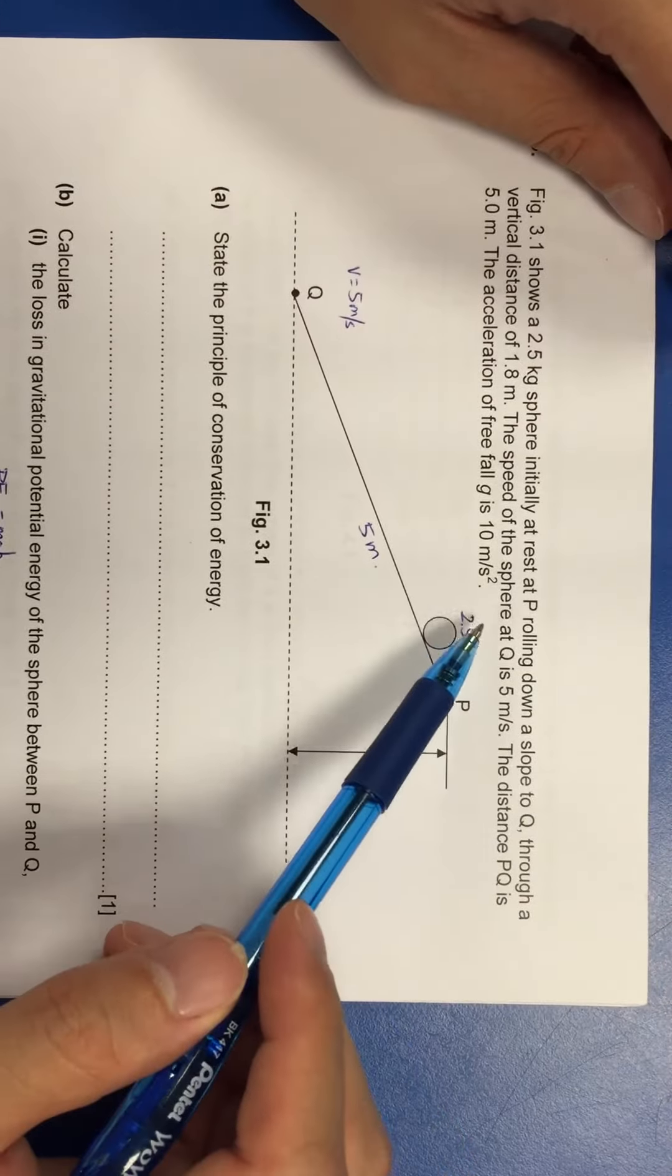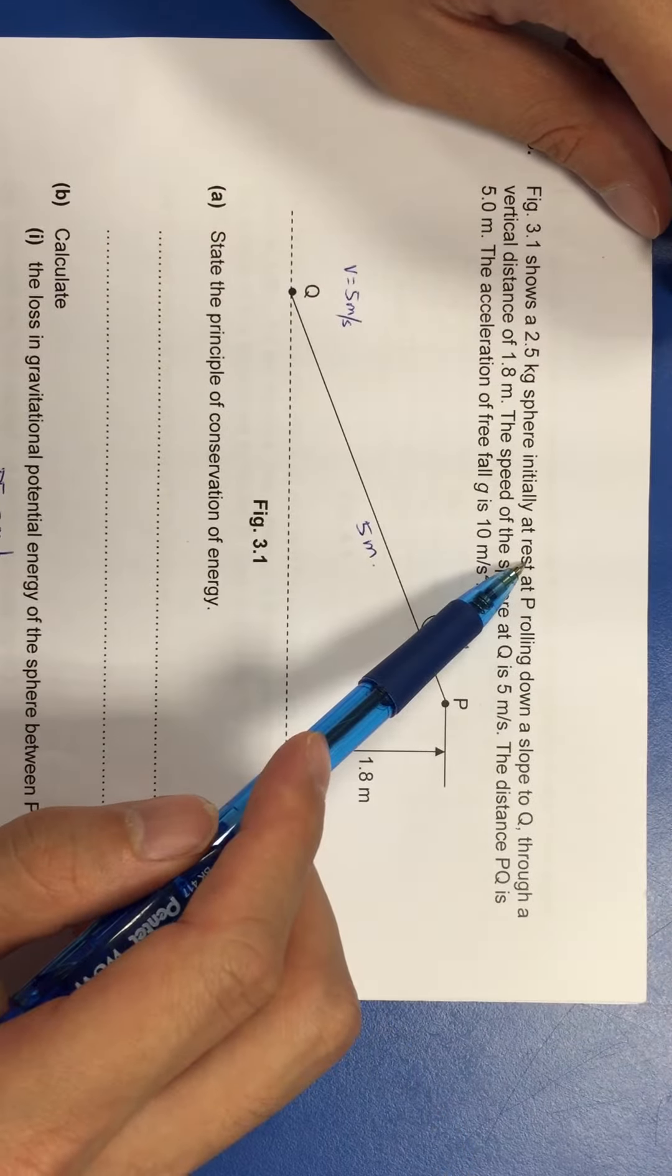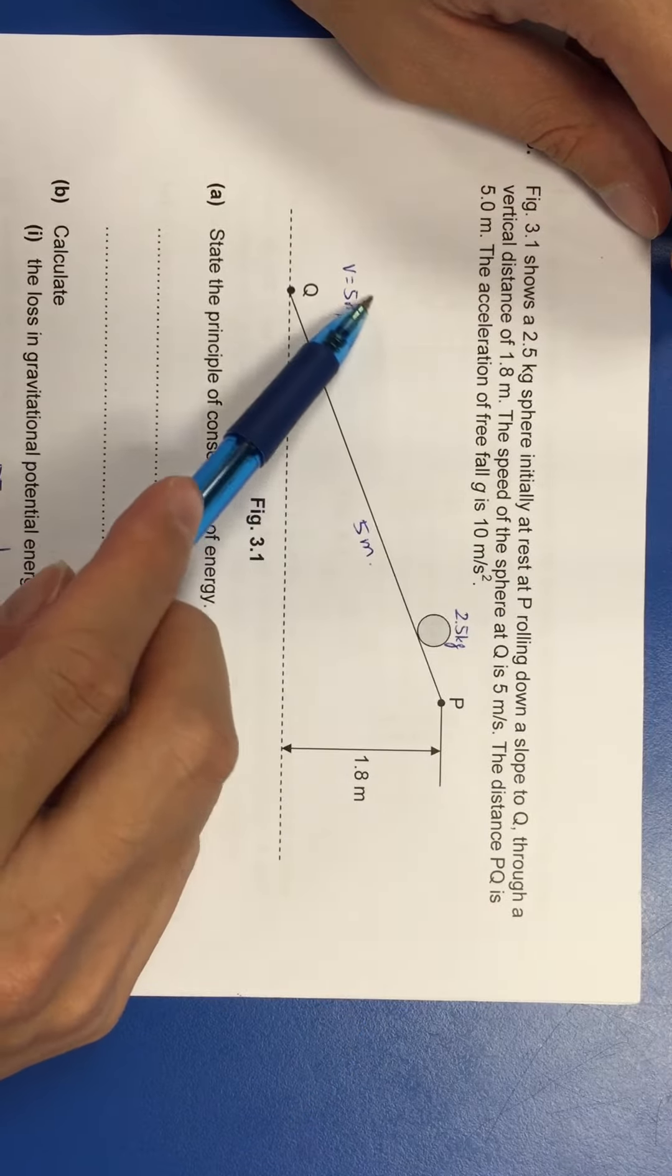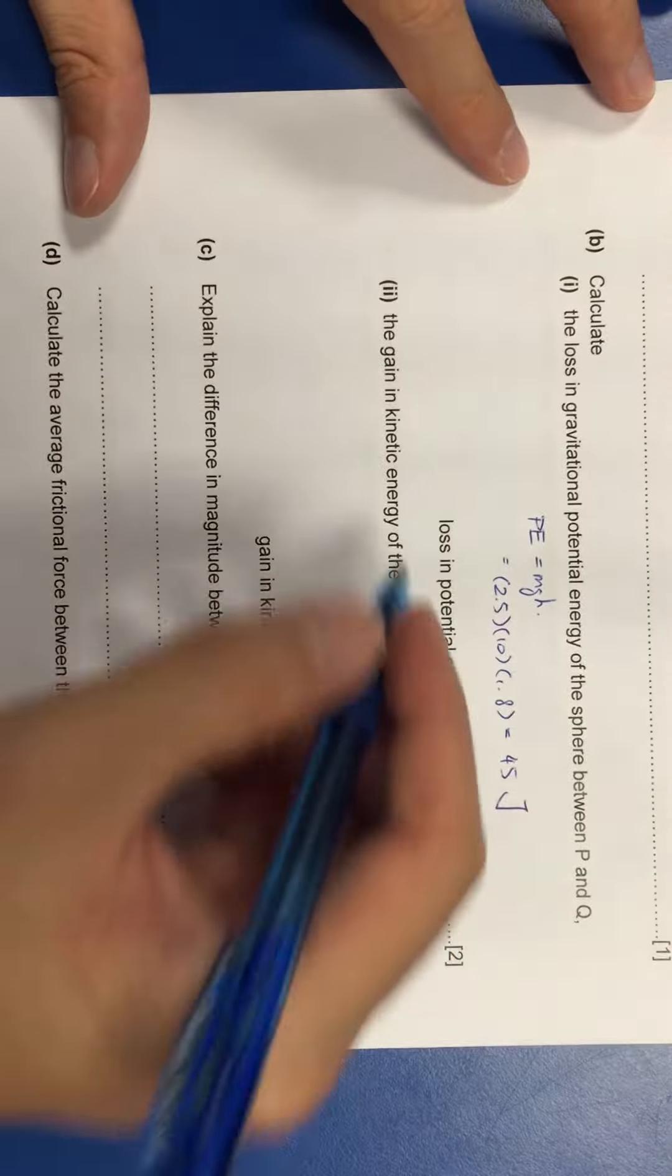So when I look at the question, I realize that at part P, it is initially at rest. And at Q, there is some velocity, meaning that I can actually calculate what is my gain in KE.